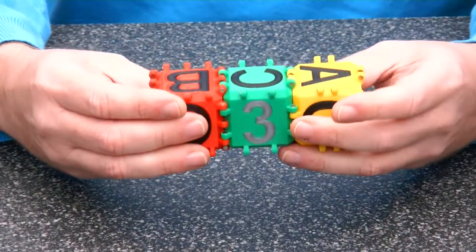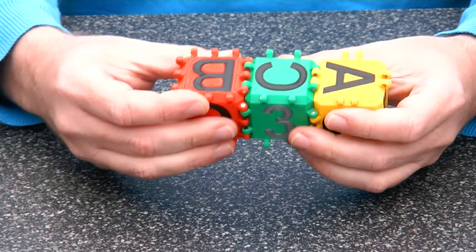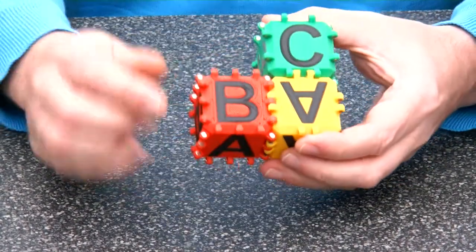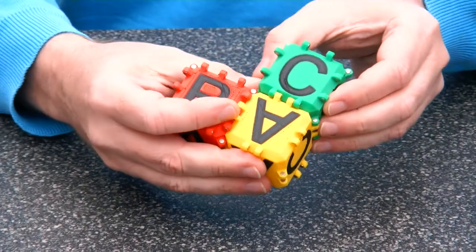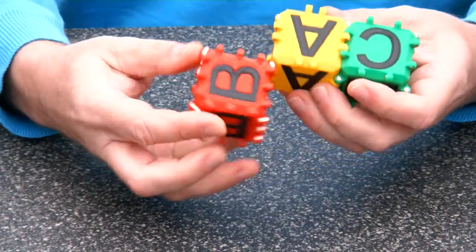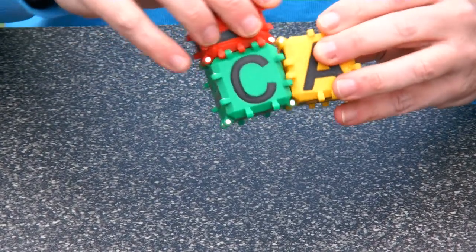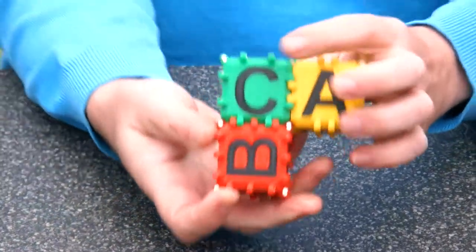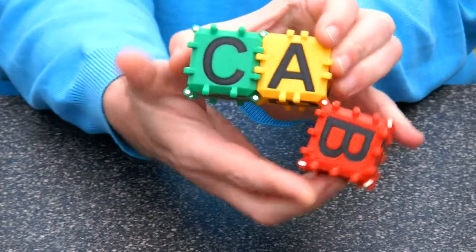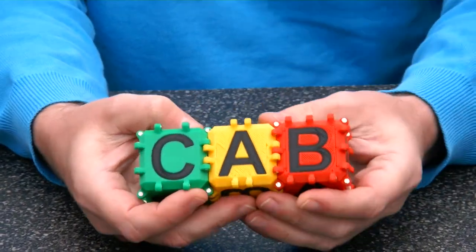But at this moment we are not getting any closer to A-B-C. Let's try this, the B looks upside down. So maybe we can roll it all the way around. Ok, here we have A-B-C.